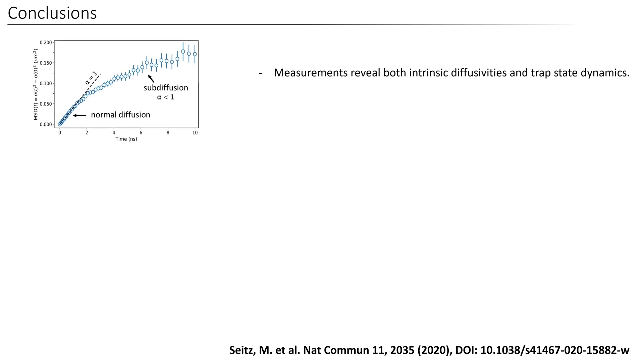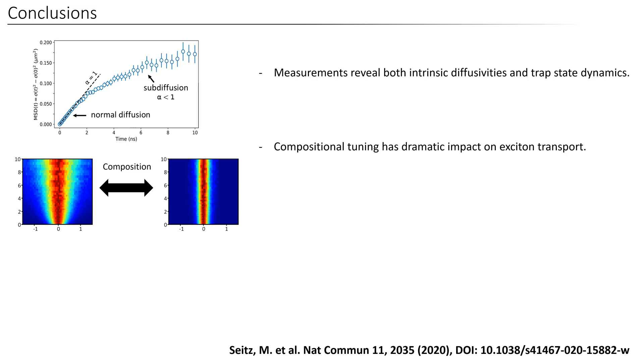In conclusion, I hope I was able to show you that excitons travel rather quickly through 2D perovskites until they encounter trapping sites which lead to subdiffusion. Also, the choice of the organic spacer can have dramatic impact on the transport properties and can yield diffusion lengths that can differ by an order of magnitude.